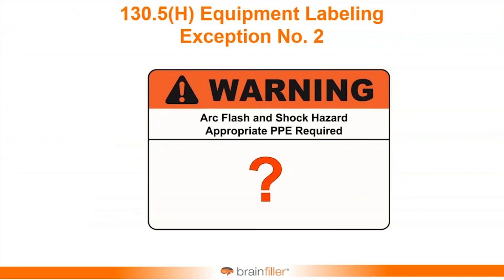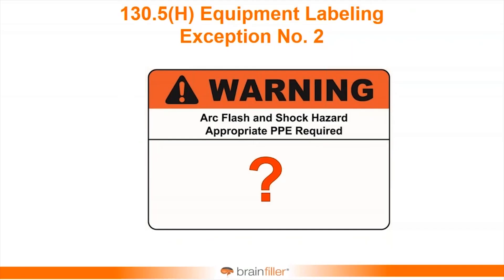I know this flies in the face of what we're used to, but what you can do is reference the department, the group, or the person that has the report — the arc flash study. You look at what configuration you're in right now, consult the report, and dress and protect yourself based on the mode you're actually operating under. Instead of multiple labels or worst case, this is a method. You don't have to do this — it's just an option given as an exception in 130.5H for equipment labeling.